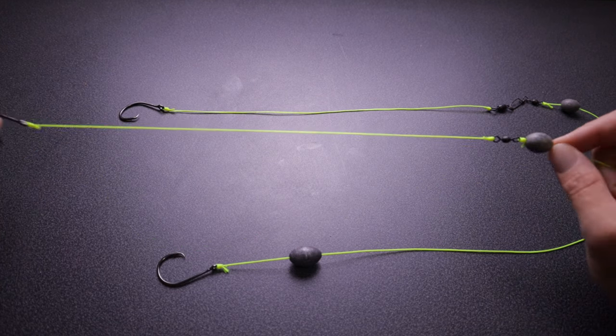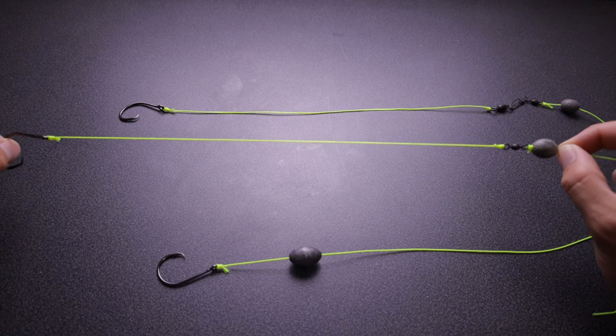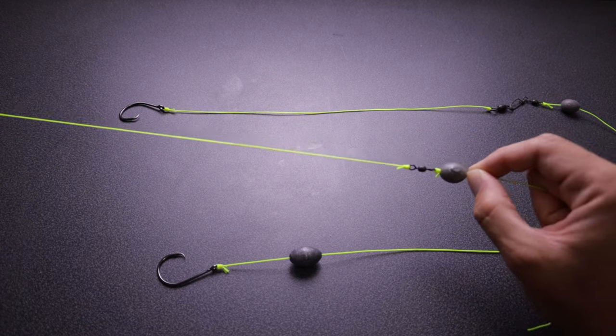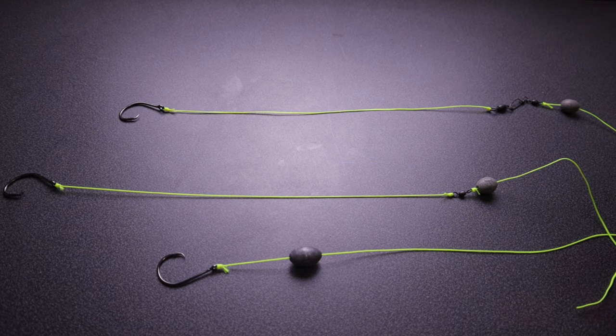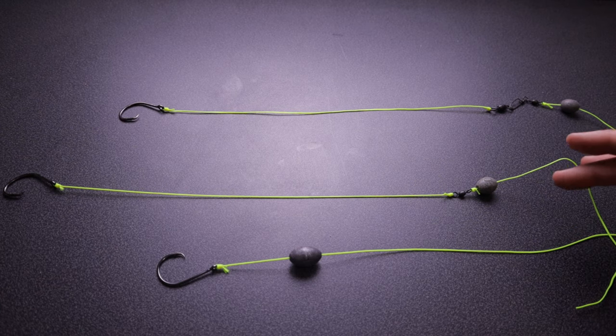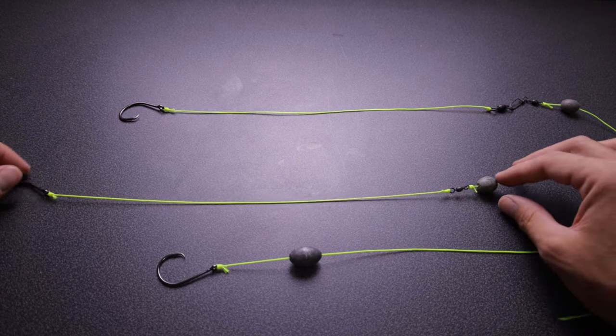This particular part of the rig has the opportunity to get tangled around your main line, and that can cause problems because the fish aren't going to think it's very natural looking. And if it gets tangled really bad when you pull up your bait, it's going to be really difficult to untangle, especially if you're dealing with braided line and thinner fluorocarbon or monofilament.